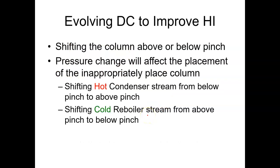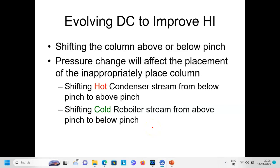If after all analysis we find that we cannot integrate the distillation column with the background process, we can manipulate the pressure. Either we increase or decrease the pressure. Increasing pressure moves the column upward and decreasing pressure shifts it downward relative to the process. The goal of pressure change is to shift the hot condenser stream from below pinch to above pinch, and to shift the cold reboiler stream from above pinch to below pinch.